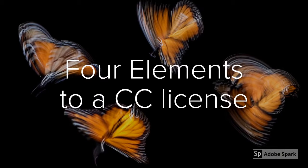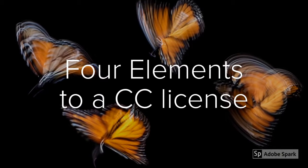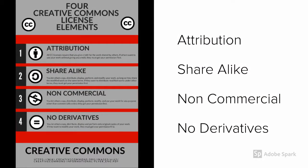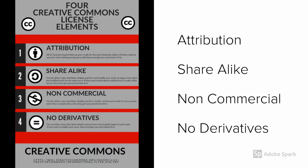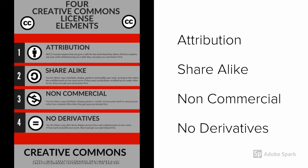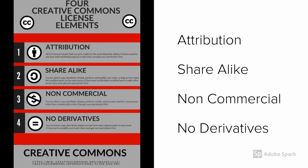Let's look at the icon images known as the four license elements. Every CC license includes the attribution element, which requires others to give you credit for your work. The share alike element lets others copy, distribute, display, perform, and modify your work as long as they distribute any modified work on the same terms. The non-commercial element tells others they can't use your work for commercial gain. The no derivatives element lets others only use original copies of your work without any changes, additions, or deletions.